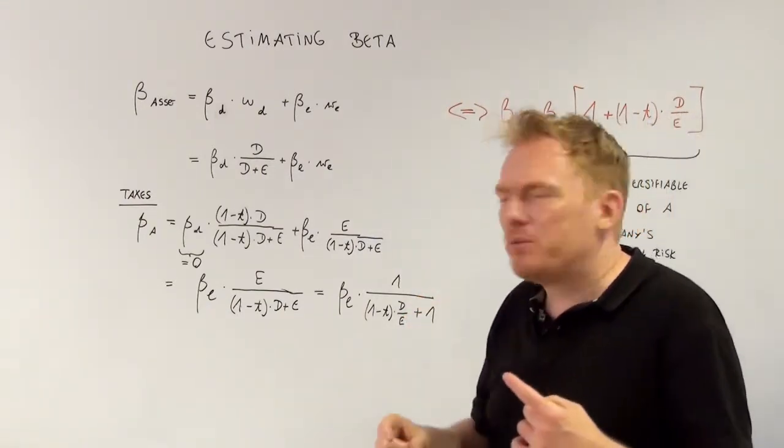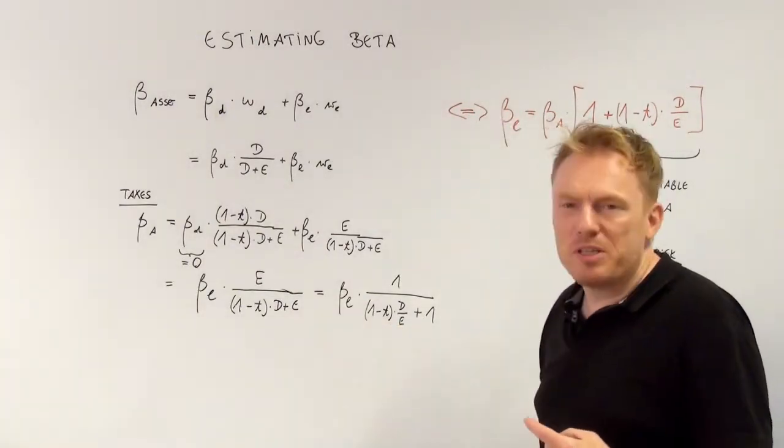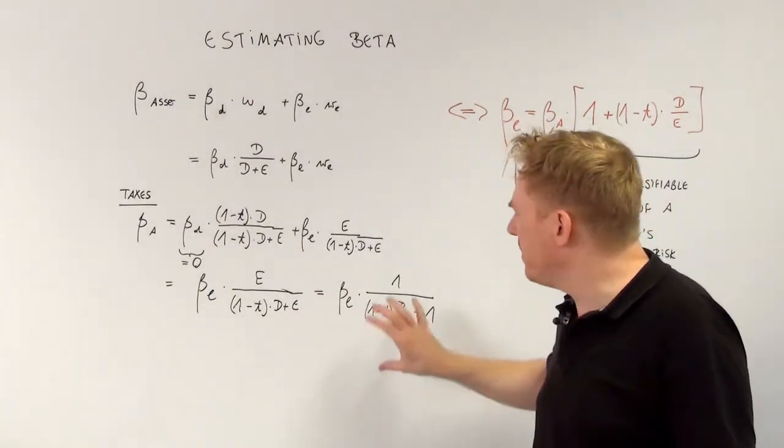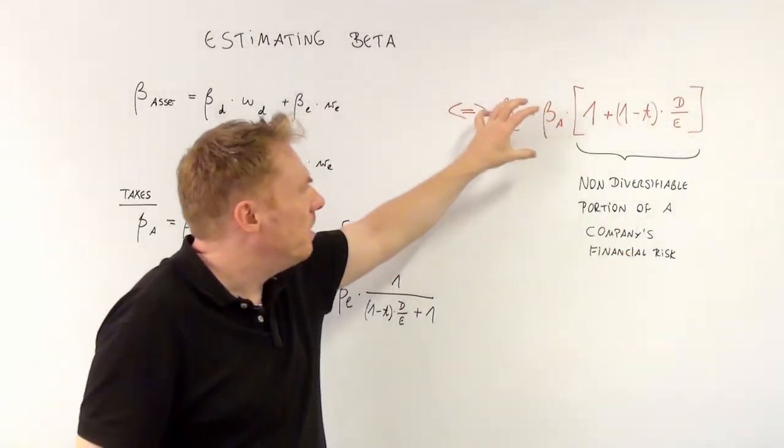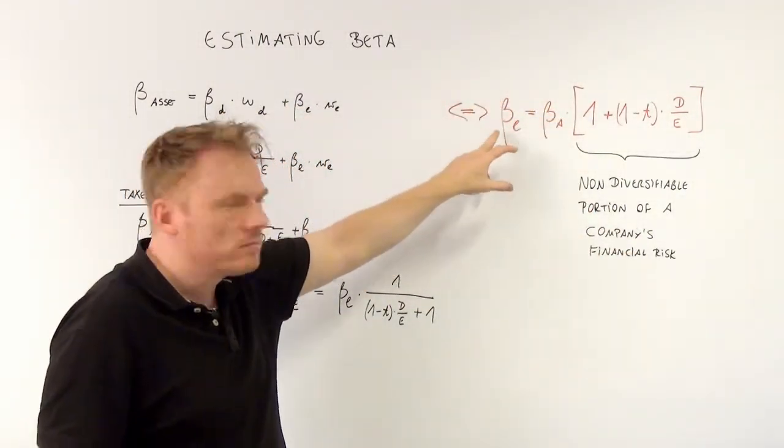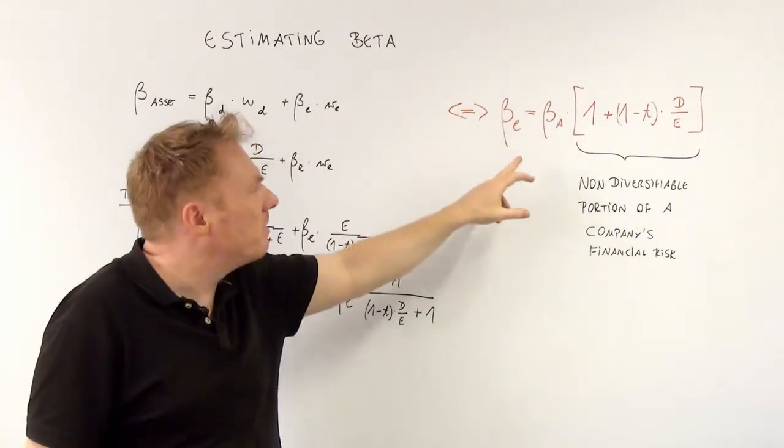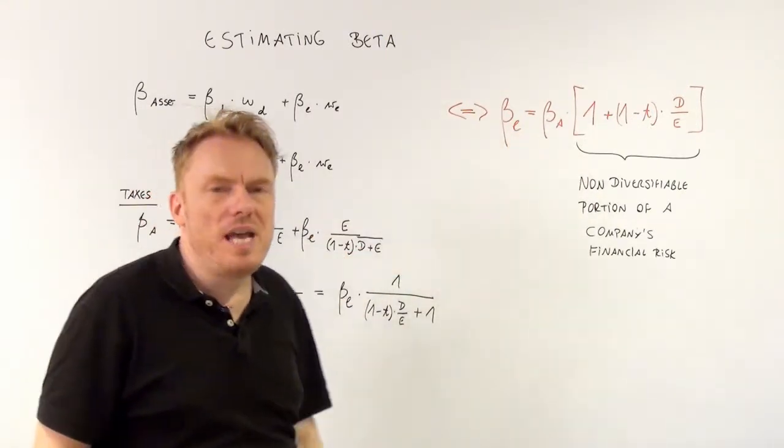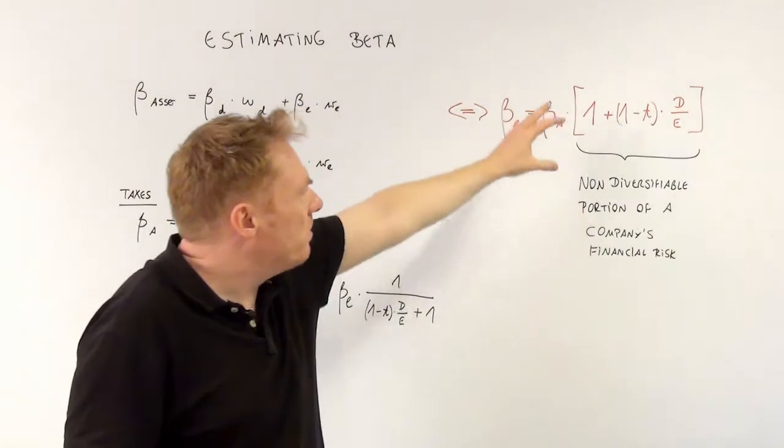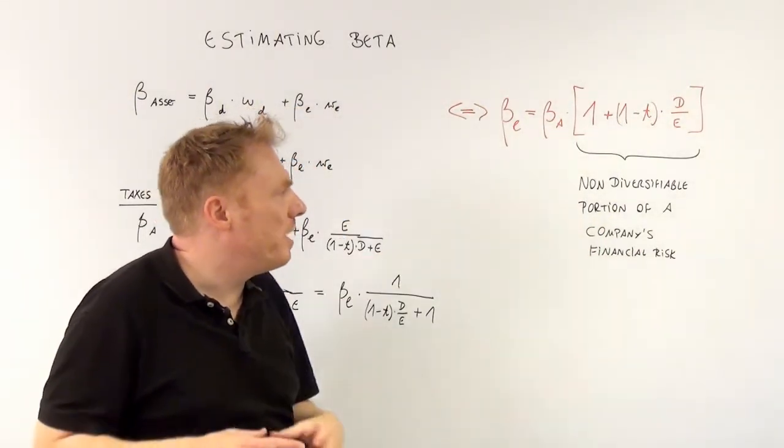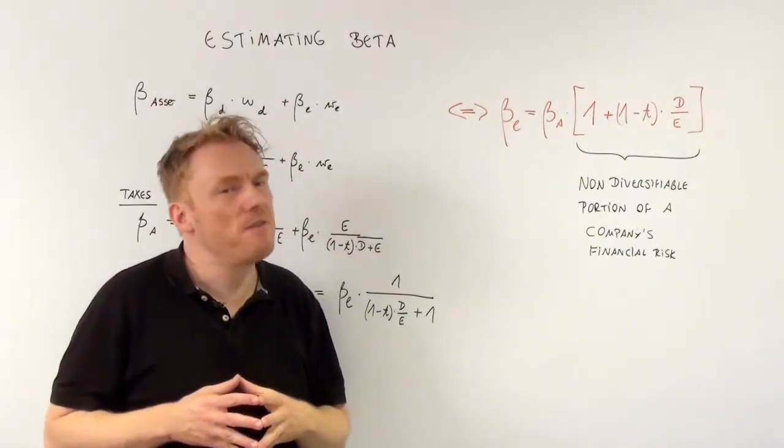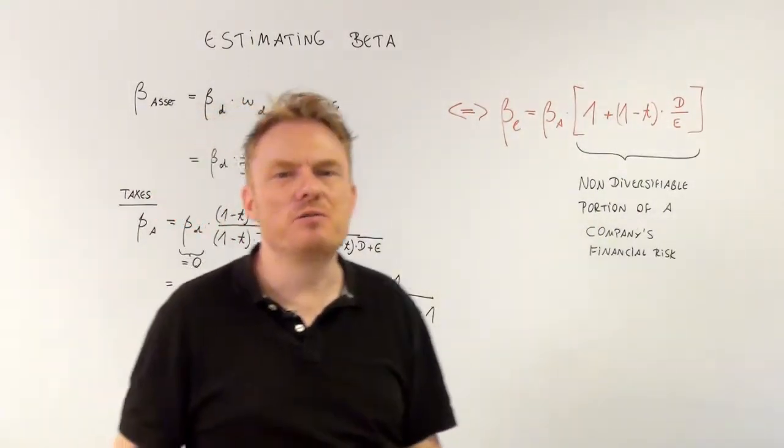We want to arrive at the equity beta. Equivalent to this is this red formula of the equity beta equal to the asset beta times this number, which signifies a non-diversifiable portion of a company's financial risk. Thank you for watching.